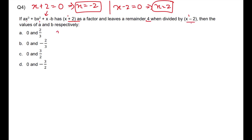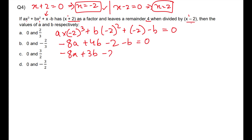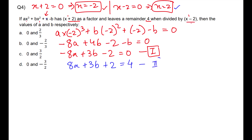So if I get the value of x as −2 from (x+2)=0, that means if I put x=−2 into the expression I should get remainder 0 because it's a factor — it completely divides it. But for (x−2)=0, I get x=2, and when I put x=2 into the same expression I should get remainder 4 instead of 0. So let us make two equations based on this and get the values of a and b. My first equation: a(−2)³ + b(−2)² + (−2) − b = 0, which simplifies to −8a + 4b − 2 − b = 0, further to −8a + 3b − 2 = 0. This is equation number 1. Then for equation number 2, I put x=2 and equate to 4, getting 8a + 3b + 2 = 4.